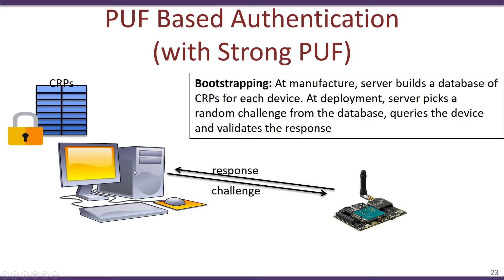That response is sent back to the server. Since we assume there is no cryptography present — no encryption, decryption, or stored keys in the edge device — the challenge and the response are sent in clear text. Once the server obtains the response, it looks up the CRP database and compares the stored response with the response obtained from the edge device, computing the Hamming distance between the two to determine whether the response originated from the specific device. In this way, the edge device is authenticated.